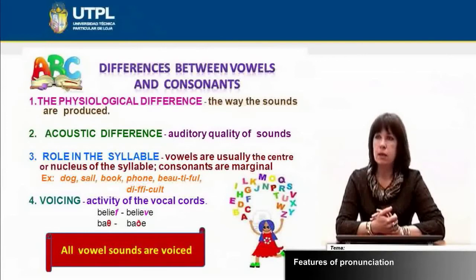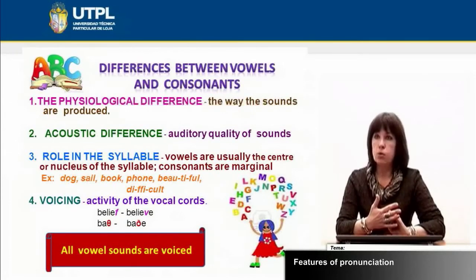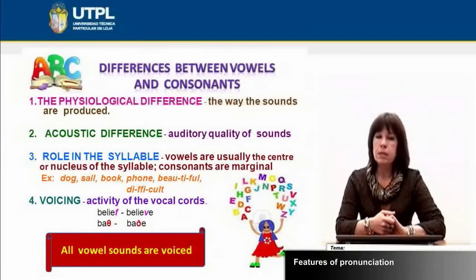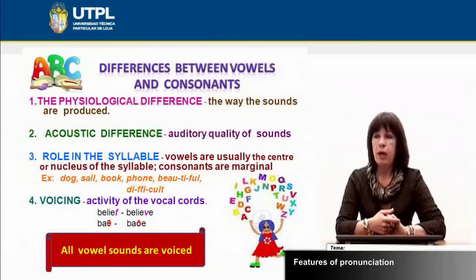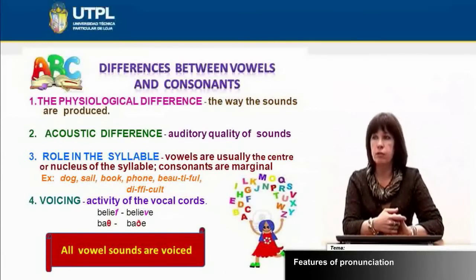All syllables must be composed of a consonant and a vowel. For example, 'dog' is a one-syllable word since it has just one vowel. 'Sail' also has one syllable — although it appears to have two vowels 'a' and 'i,' when pronounced it is one sound, one phoneme, a complex sound. Words like 'beautiful' or 'difficult' can be divided into more syllables. Vowels play a very important role in syllable division. The fourth aspect is voicing — activity of the vocal cords: all vowels are voiced, while consonants can be divided into voiced and voiceless.